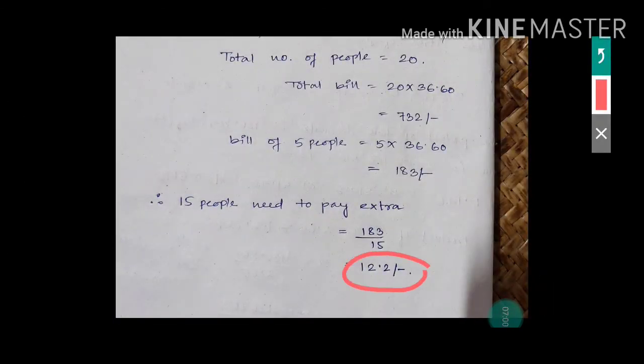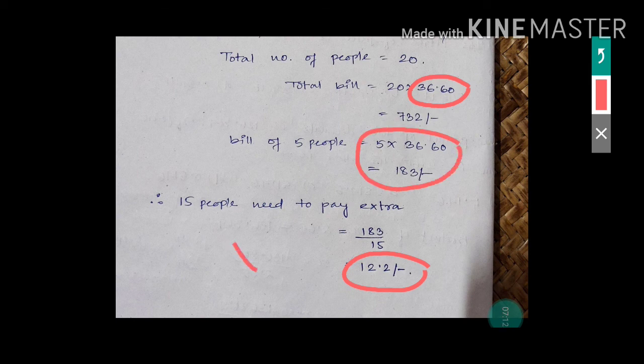That means each of the 15 people has to pay an extra 12.20 rupees, besides their own 36.60. Only then will the five people's bills be covered; otherwise the restaurant owner will not allow them to leave.